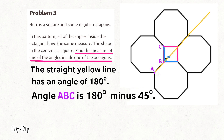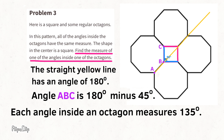The yellow line represents a straight angle of 180 degrees. Angle ABC equals 180 degrees minus 45 degrees, because the yellow line cuts through the square, cutting the 90-degree right angle in half — and half of 90 is 45. So 180 minus 45 equals 135 degrees. Each angle inside an octagon measures 135 degrees.